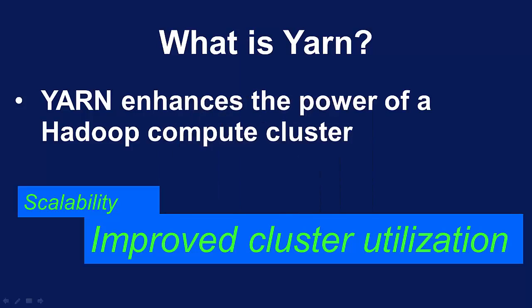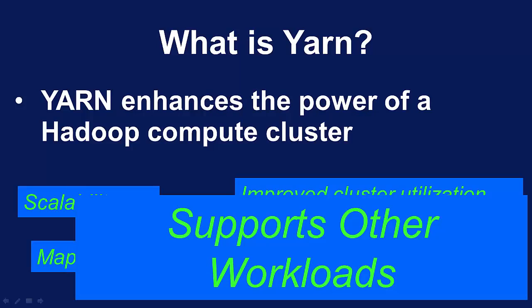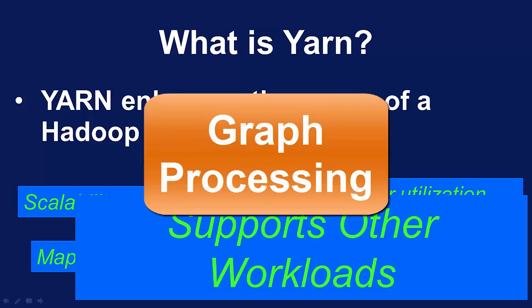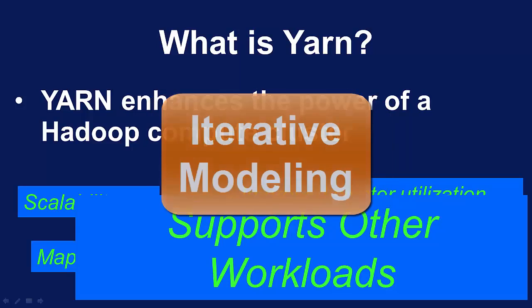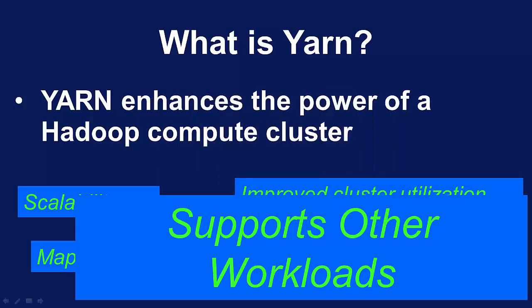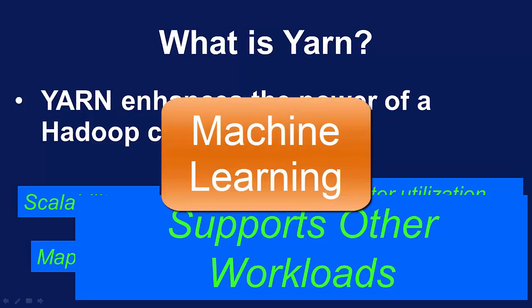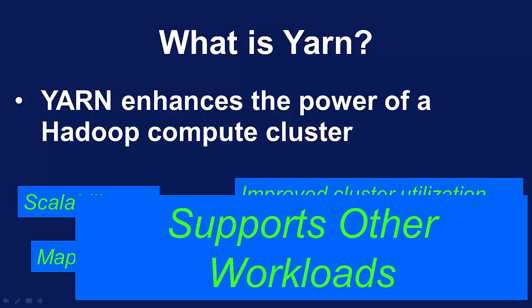Unlike before, there are no named map or reduce slots, so it helps us utilize the cluster in better ways. YARN supports other workflows beyond just MapReduce — we can bring in additional programming models such as graph processing or iterative modeling. It's now possible to process data in new ways, which is especially useful when talking about machine learning applications. We're going to talk more about that in one of our upcoming classes.